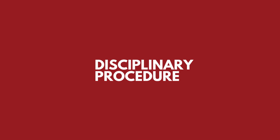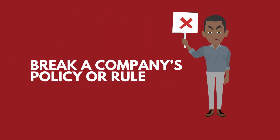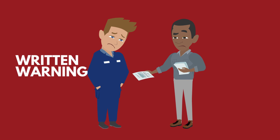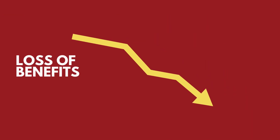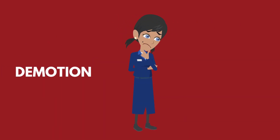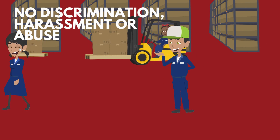Disciplinary procedure: In cases where employees break a company's policy, rule, or their contract, the company can follow a disciplinary process. There are different types of disciplinary action that can be given: a verbal warning, a written warning, a performance improvement plan, loss of benefits, suspension, demotion, or termination.